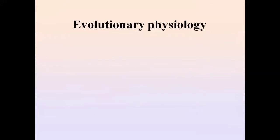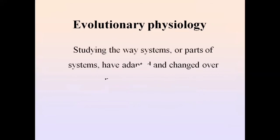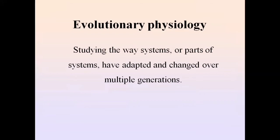Another branch of physiology is evolutionary physiology. In evolutionary physiology we study how the systems or parts of a human being change over multiple generations — since the origin of human beings and the origin of life on earth. Over the passage of time, multiple changes have occurred in living organisms, and all these changes that occurred through a long period of time are studied under evolutionary physiology.